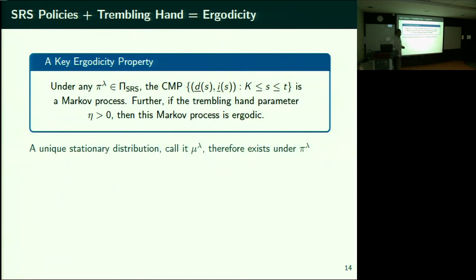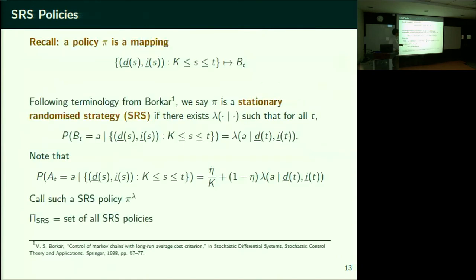There may be a better policy that looks at history. So as of now I'm restricting attention only to SRS policies — the lower bound restricts to SRS. This R* is an increasing function as η goes to zero — I'll just highlight that. So this is what we call the metric — the closeness between the odd movie and a non-odd movie that your brain tries to capture.